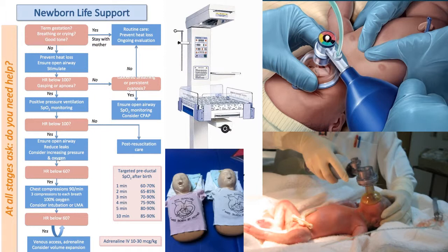Prevent heat loss, ensure open airway and stimulate by drying. Heart rate below 100, gasping or apnoea — no: assess for laboured breathing or persistent cyanosis. No: routine care, prevent heat loss and ongoing evaluation. However if laboured breathing or persistent cyanosis — yes: ensure open airway, SATs monitoring and consider CPAP.